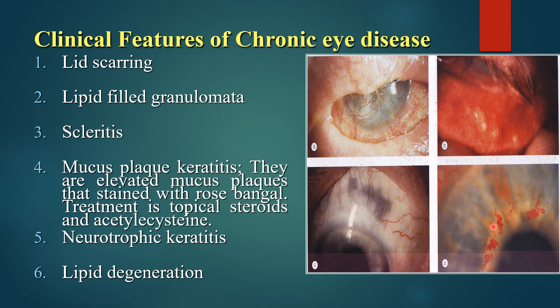Treatment of mucous plaque keratitis is with topical steroids and acetylcysteine eye drops; oral acetylcysteine may also help resolve and disperse the mucus plaques. Neurotrophic keratitis can occur due to damage to the corneal sensory nerves, and there may later be lipid degeneration with corneal opacities.